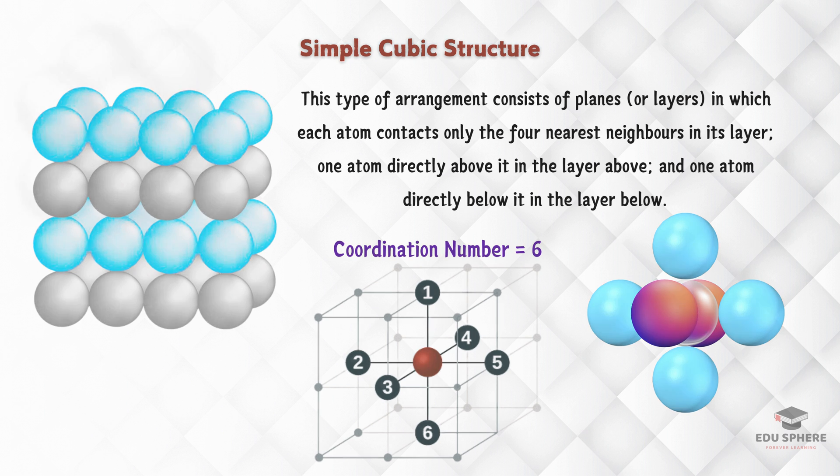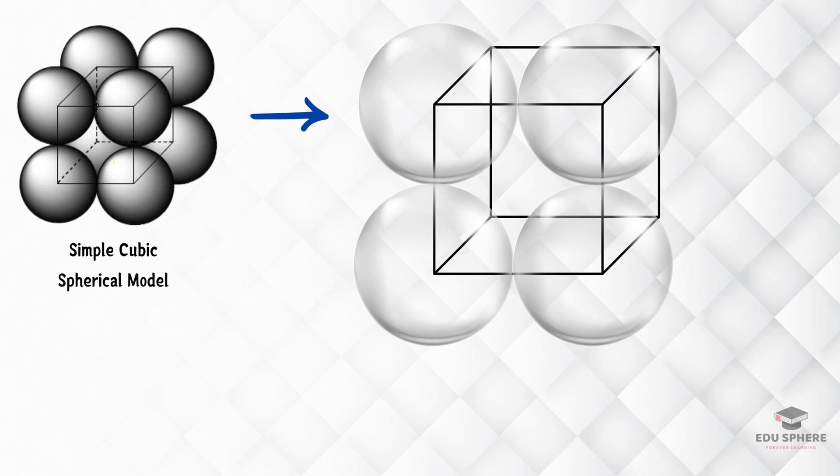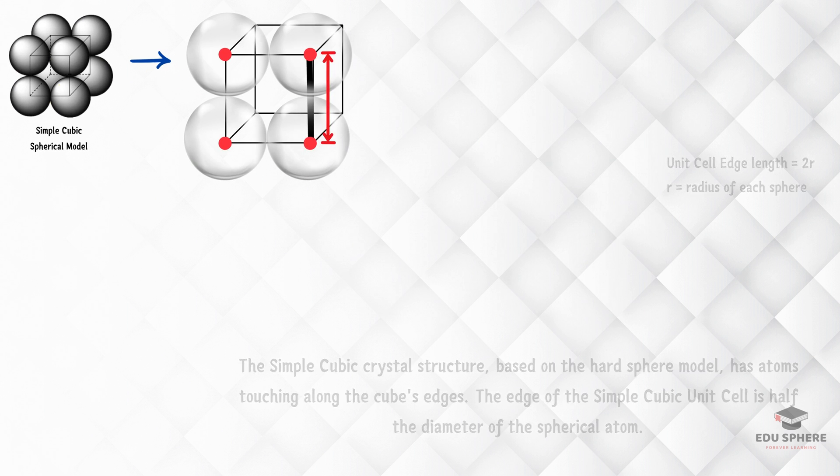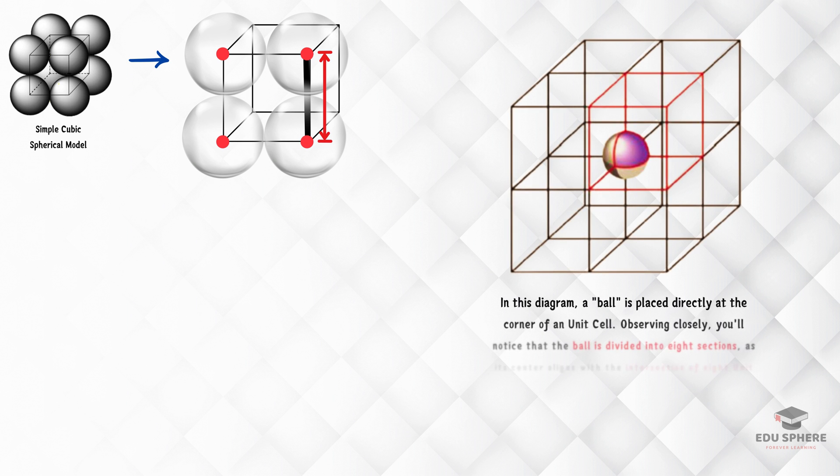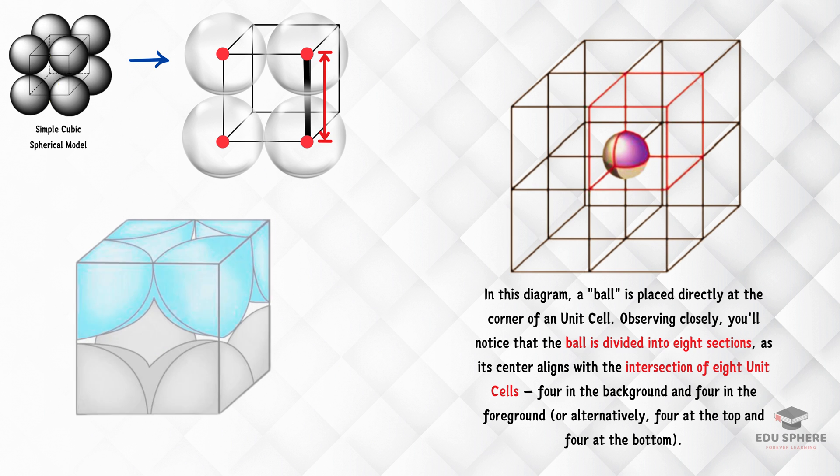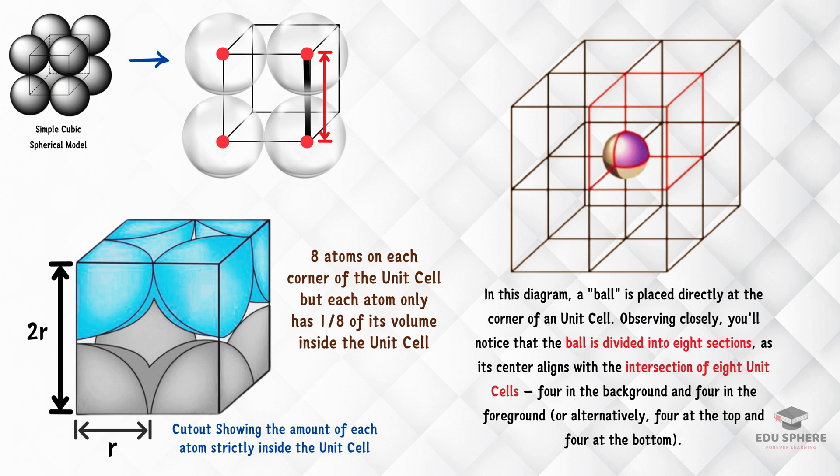In this simple cubic structure, the repeating pattern is a tiny cube. Imagine tiny boxes built around the centers of those spheres. See how the spheres at the corners touch each other. Because of that, the size of the edge of this unit cell is exactly twice the width of a single sphere. Now, each sphere sits right at the corner of eight unit cells, so only a tiny part of that sphere actually belongs inside this specific unit cell.